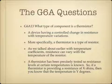What type of component is a thermistor? It's a device having a controlled change in resistance with temperature variations. More specifically, a thermistor is a type of resistor. As we talked about with temperature coefficients, resistance can vary with the temperature of the resistor. A thermistor has been precisely tested so resistance levels at certain temperatures are known — so if a thermistor is providing resistance of X ohms, you know the temperature is Y degrees, and you can use these almost as a thermostat.